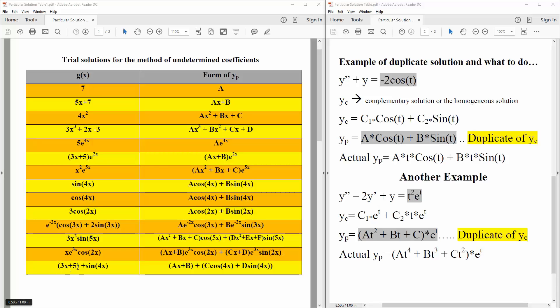And lastly, we got 3x plus 5, plus sine 4x, so we would say this right here would be ax plus b, and then here we would have c cosine 4x plus d, sine 4x.